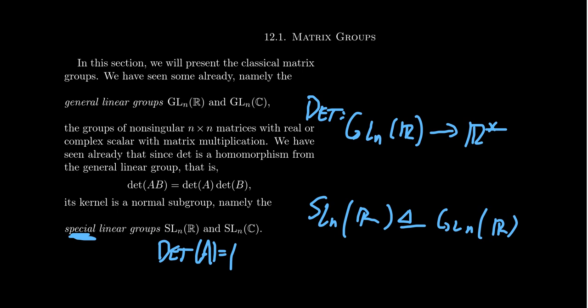You can modify the real numbers with basically your favorite field or ring and talk about the special linear group over that ring or field — the set of all non-singular matrices whose determinant is 1, where 1 is the multiplicative unit of that ring. In the classical sense, we only talk about real and complex numbers, and maybe quaternions. The general linear group and the special linear group are the two main families of the classical matrix groups.